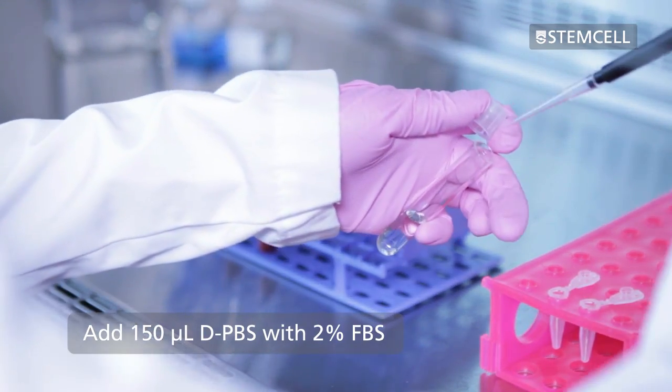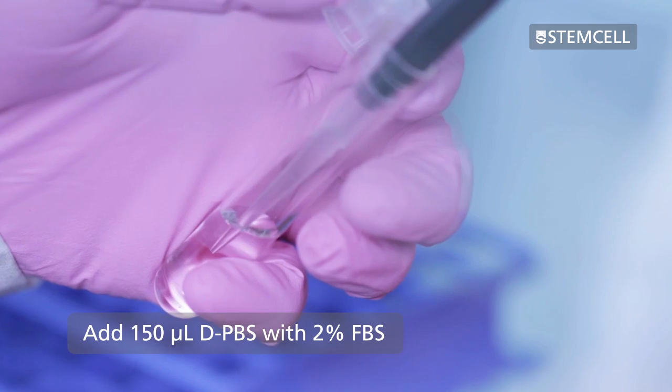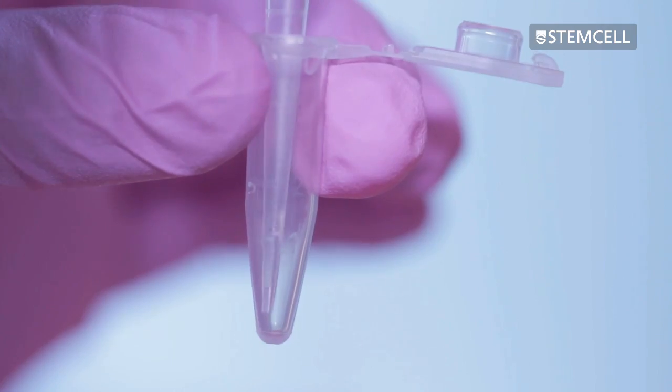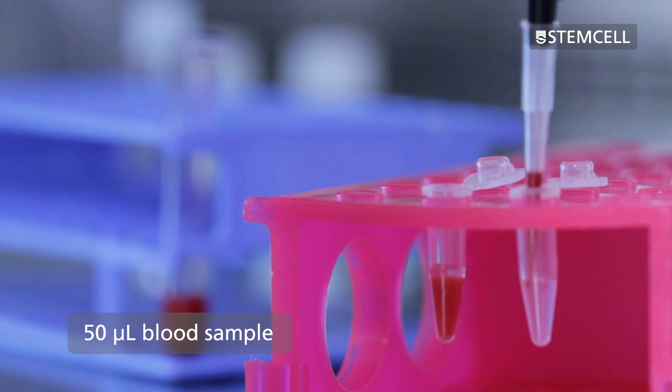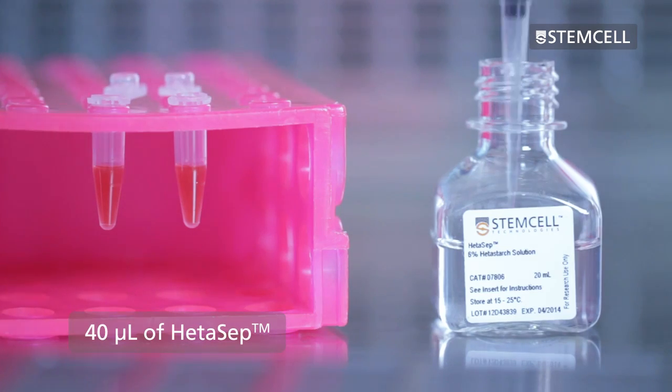Add 150 microliters DPBS with 2% FBS, 50 microliters of blood sample, and 40 microliters of HetaSep.